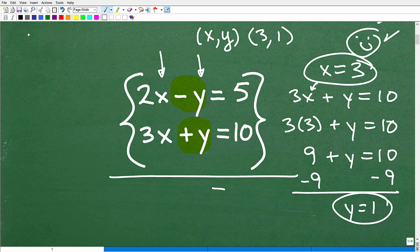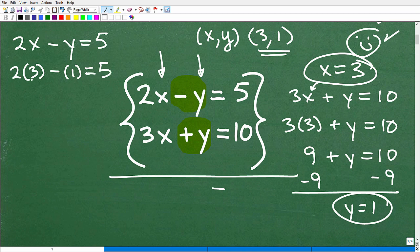We'll take one of the equations. We'll take 2x minus y equals 5. And let's plug in these values. x is 3 and y is 1 into this equation. Let's just make sure it checks. So we get 2 times x is 3, right? And y is 1. So I'm just substituting the x and y values for here for x and y. So 2 times 3 is 6. 6 minus 1 is, of course, 5. And 5 equals 5. That's a true statement. So that means that these solutions are good.